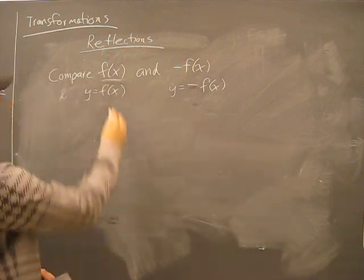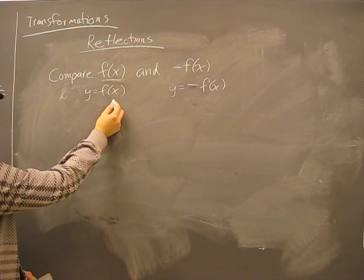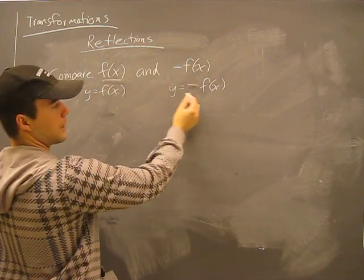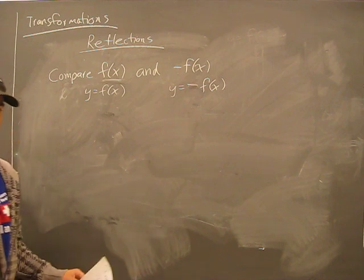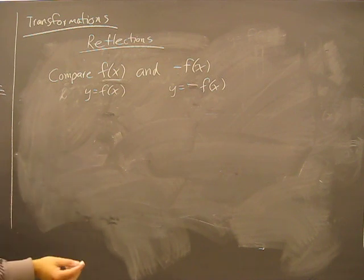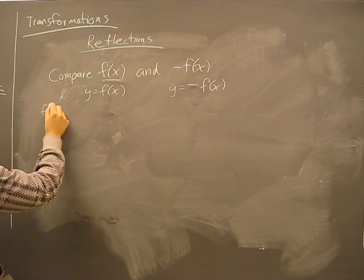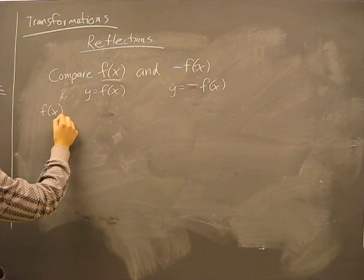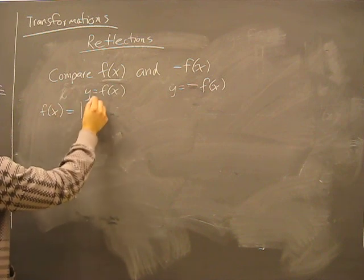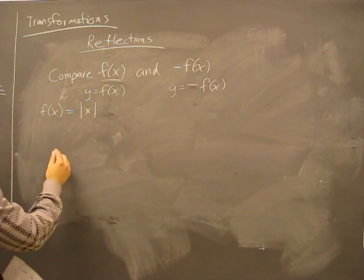So this is like saying y equals f(x) and y equals negative f(x). We're going to see what the difference is. We'll use a simple function — let's say the function of x is the absolute value of x.